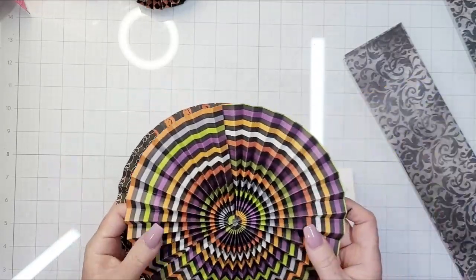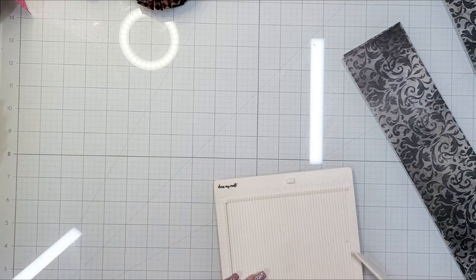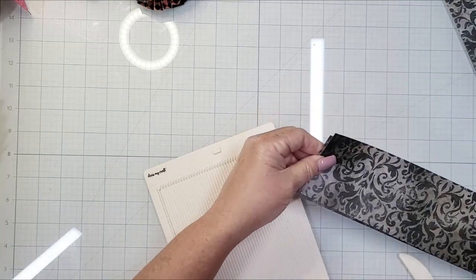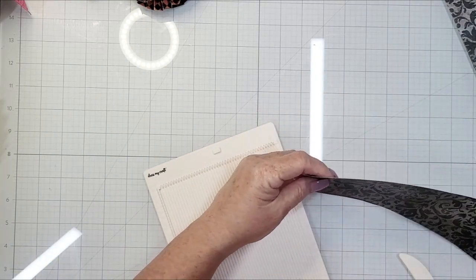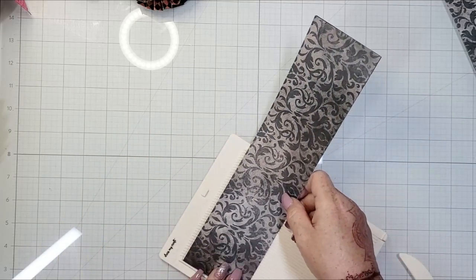These two on the screen, the pumpkin one was open stock from Joann's. I think the striped one was as well. It may have been from Close to My Heart, but I feel like it was open stock from Joann's.